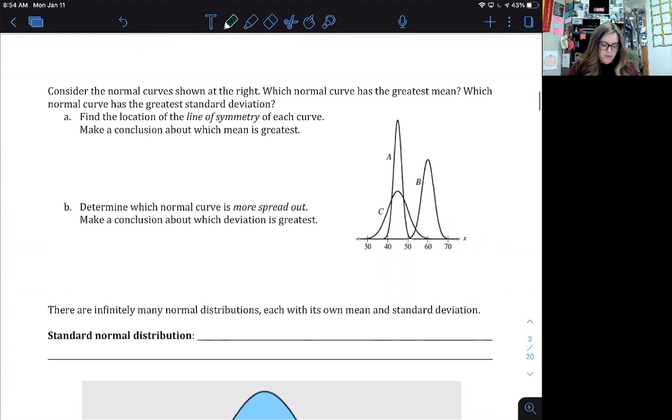So we have two different examples here, an A and a B. We're talking about that line of symmetry and the curve, and how spread out for the standard deviation. So I want you to try these and then we'll talk about them tomorrow in class.